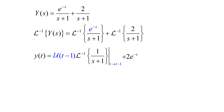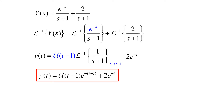We take the inverse Laplace of 1 over (s plus 1), which gives us e to the negative t, and apply our translation to get y(t) equals u(t minus 1) times e to the negative (t minus 1), plus 2e to the negative t. So that'll be the solution to our initial value problem.